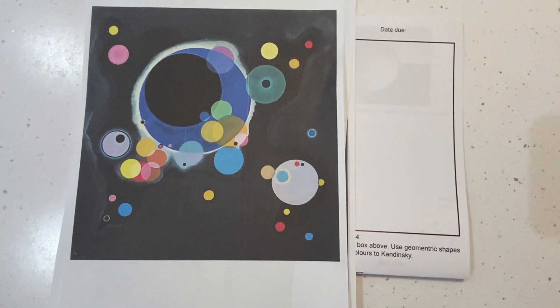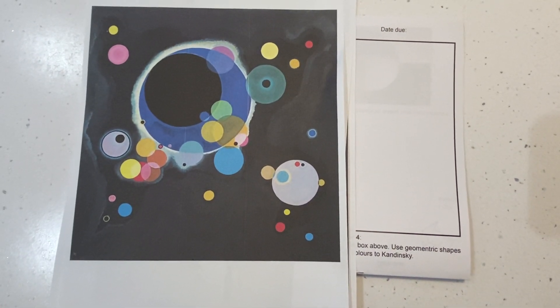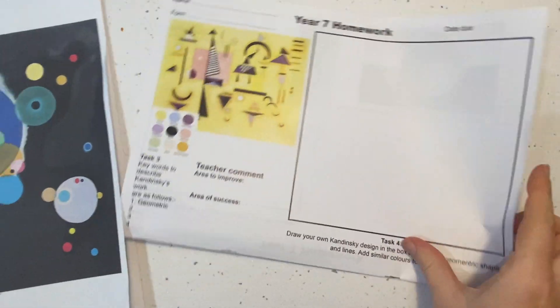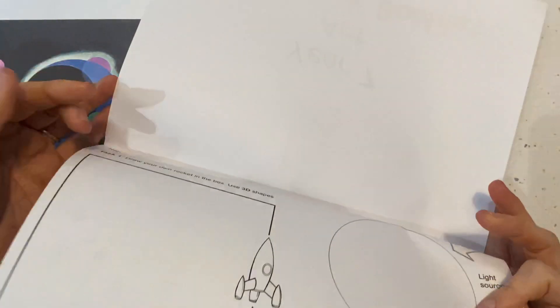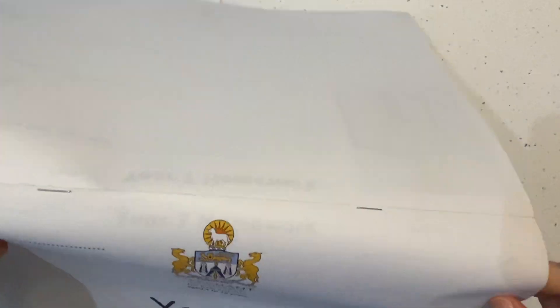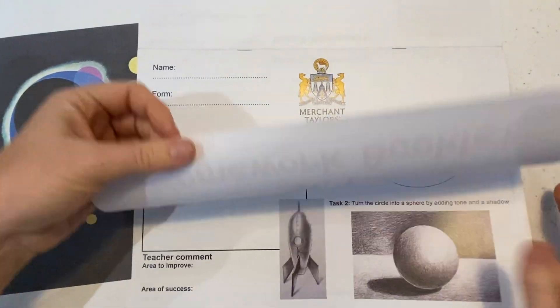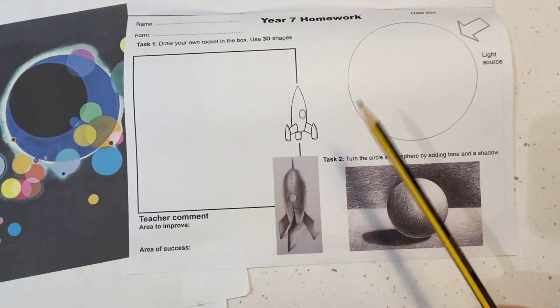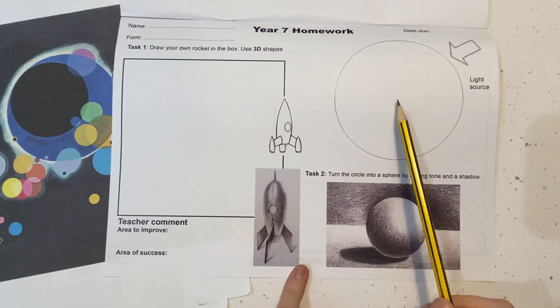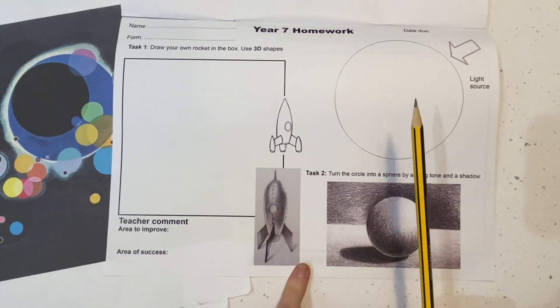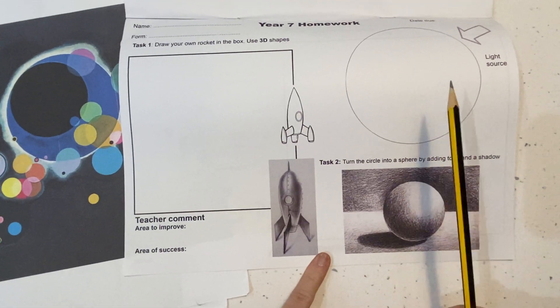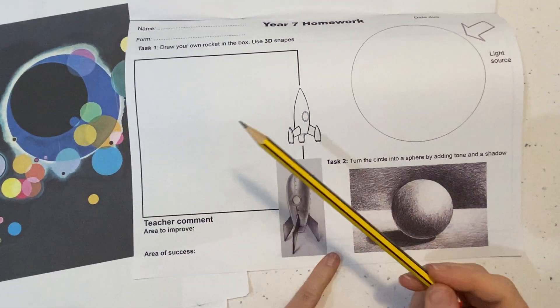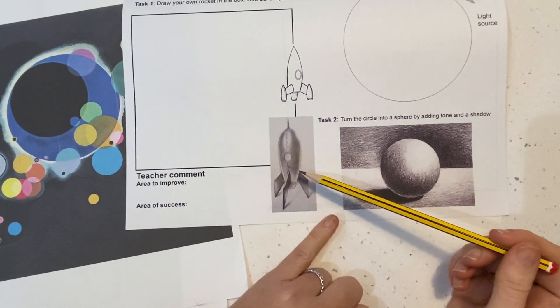Hi Year 7, hope that you're all well and you had a nice Christmas with your families. For today's lesson we are going to be working on the second page in your homework booklet. Everyone should have done the sphere before the Christmas holidays, and over the Christmas period I set a homework on Firefly for you to complete the rocket drawing.